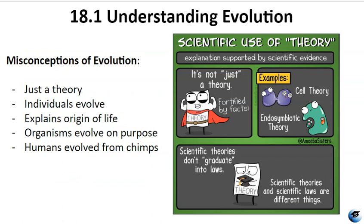When Darwin first introduced the theory of evolution, it stirred up some controversy. However, within 20 years of publishing his book on the origin of species, most biologists — especially the younger ones — embraced the theory. Despite its wide acceptance, misconceptions about how evolution works still persist. One misunderstanding is dismissing evolution as just a theory. In science, a theory is a well-tested explanation based on evidence — evolution is supported by solid evidence, like gravity and atomic theories.